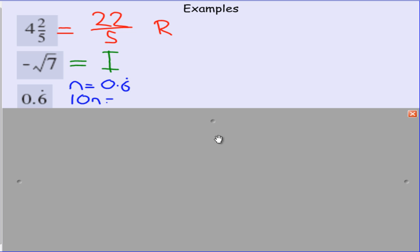So in this case, we only need to multiply it by one ten. And that makes our number 6.6 recurring. What we're going to do then is we're going to take away an n from both sides,